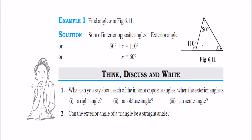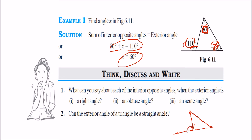Find angle x. The exterior angle is 110, and the two interior opposite angles are 50 and x. So 50 plus x equals 110; therefore x equals 60. Can you say anything about each interior opposite angle when the exterior angle is a right angle? When the exterior angle is 90 degrees, the sum of the two interior opposite angles will be 90 degrees.